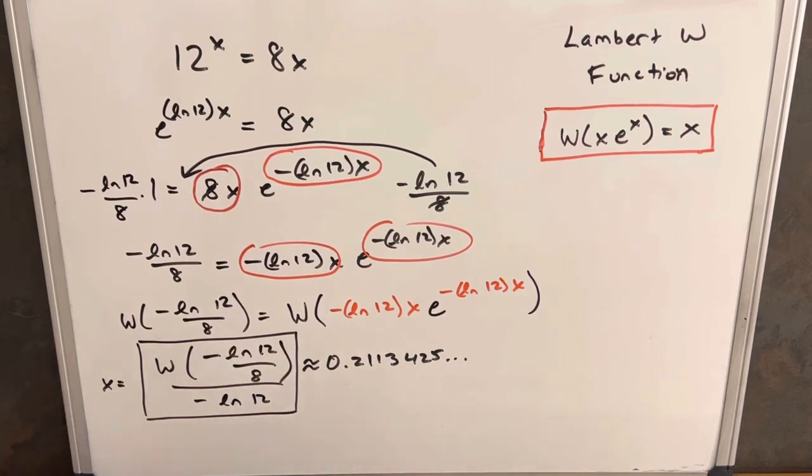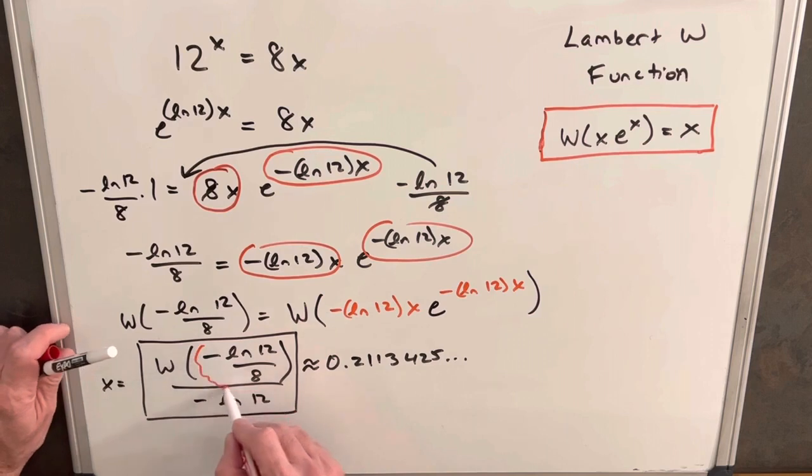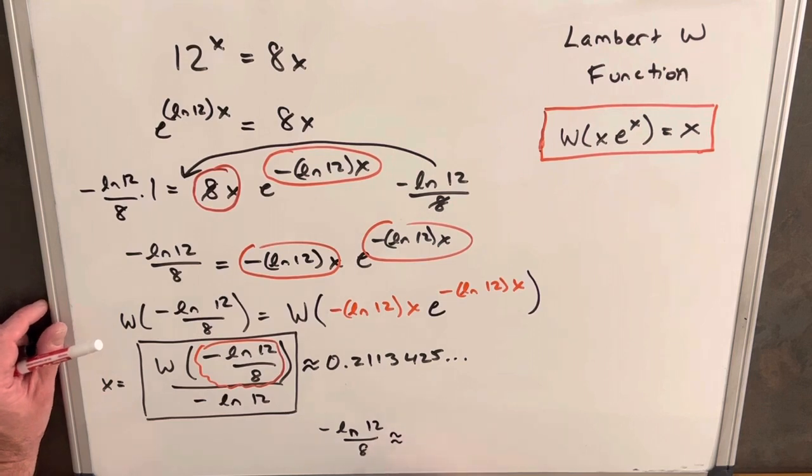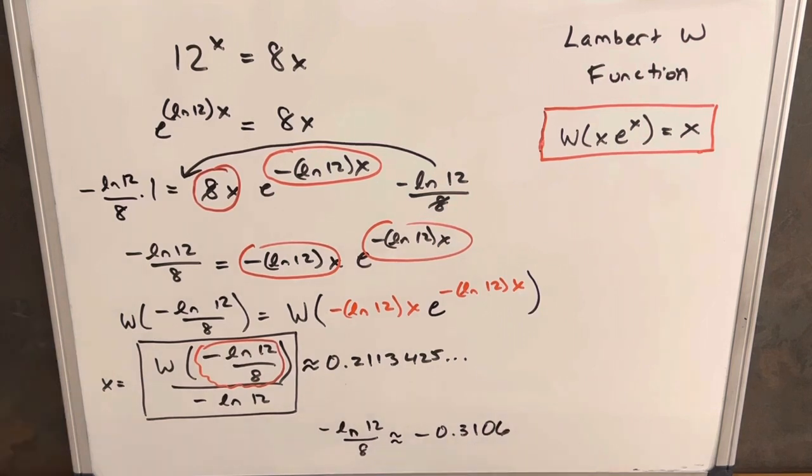What we can do is we can just look at this, what we have inside here, and let's look at this value. So this I could just do with a calculator, and I found that minus ln 12 over 8 is about minus 0.3106. And then what we can do to determine if we have other real solutions is we can look at a graph and see what we can find out.